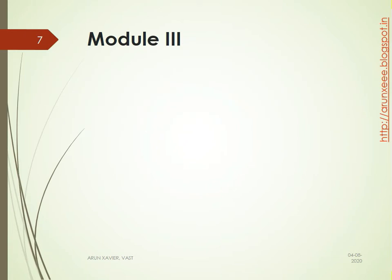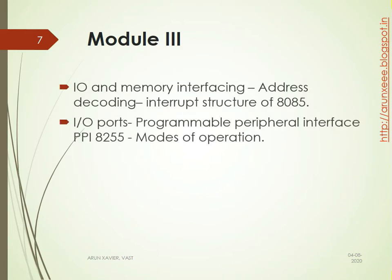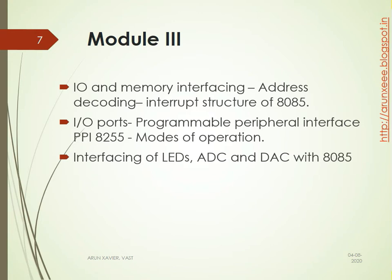Module 3 is about interfacing — memory and I/O interfacing, how address decoding works in the 8085, and the interrupt structure of 8085. There is another IC, the 8255, called the Programmable Peripheral Interface, referred to as PPI 8255. We will study its structure and modes of operation. We also study how to connect LEDs, ADC, and DAC with the 8085 — that is, the interfacing of these items to the 8085.